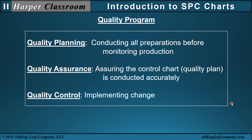The steps in the approach of process control charts can be described as part of a quality program. I divide the quality program into three stages: quality planning, quality assurance, and quality control. Quality planning is everything done before you start monitoring production — constructing the chart and identifying the quality characteristic. Quality assurance is ensuring that the control chart, as part of the quality plan, is conducted accurately. And quality control is implementing changes.